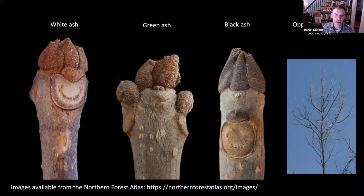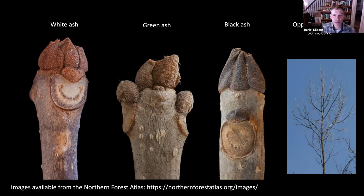Those black ash buds are really jet black, like a chocolate chip or a Hershey's kiss, while the other two are more of a buff brown color. The terminal bud on black ash sits up on a little stalk — there's a space between that and the first set of lateral buds, unlike white or green where things are pressed right up together. Ash leaves are compound, meaning the whole thing is one leaf. They're typically made up of five to nine leaflets. White ash tends to have clearly stalked leaflets — you can see the little petiole that connects the leaflets to the main stock — and white ash has light-colored whitened undersides, which is how it gets its name.